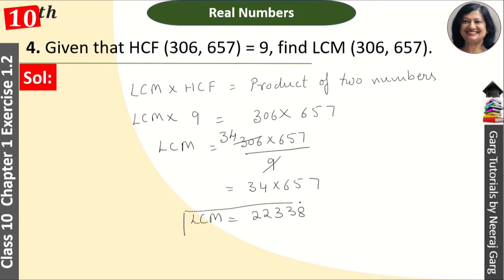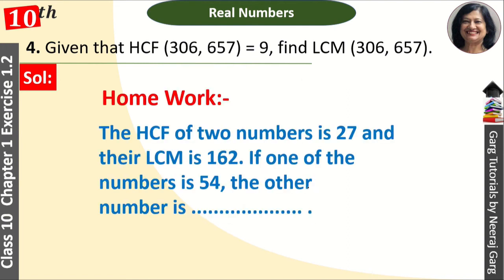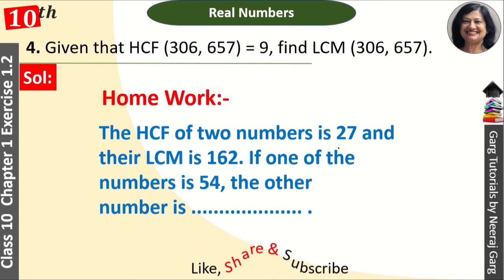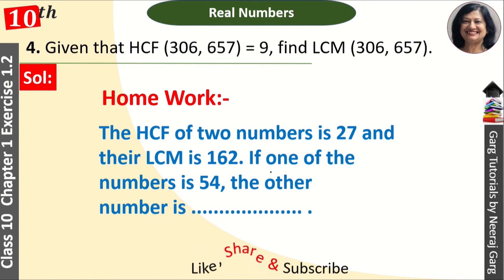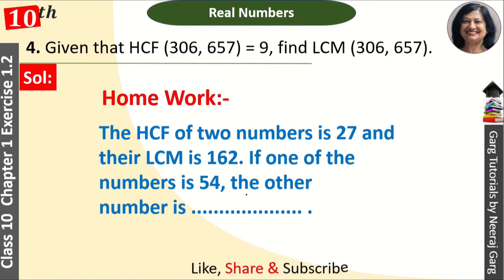This is our LCM. It's very easy, and this is a question that comes in one mark. Now for homework: the HCF of two numbers is 27 and LCM is 162. If one of the numbers is 54, find the other number.